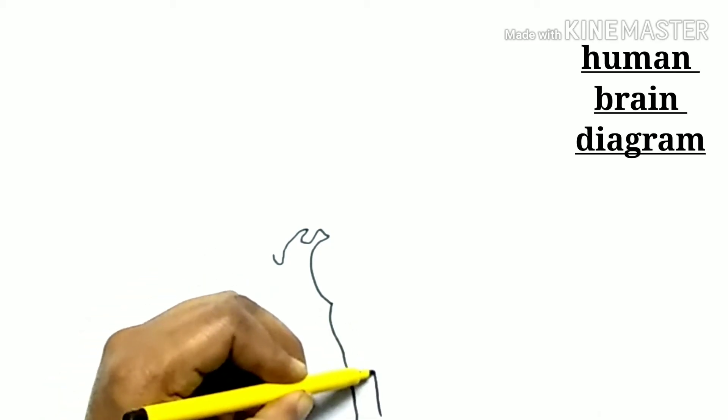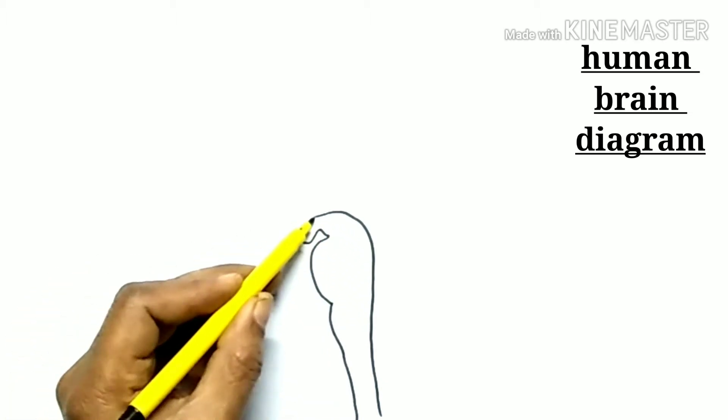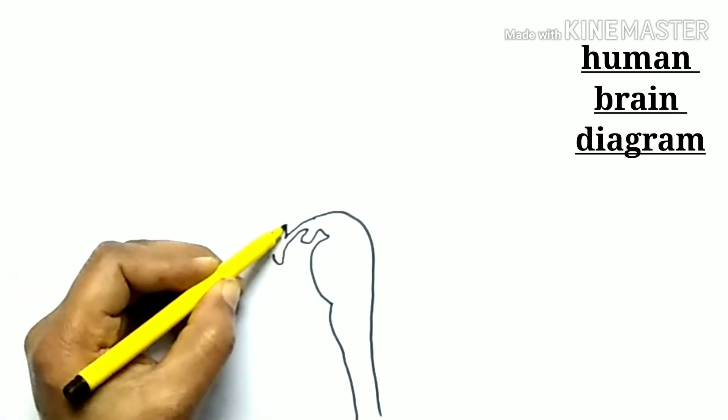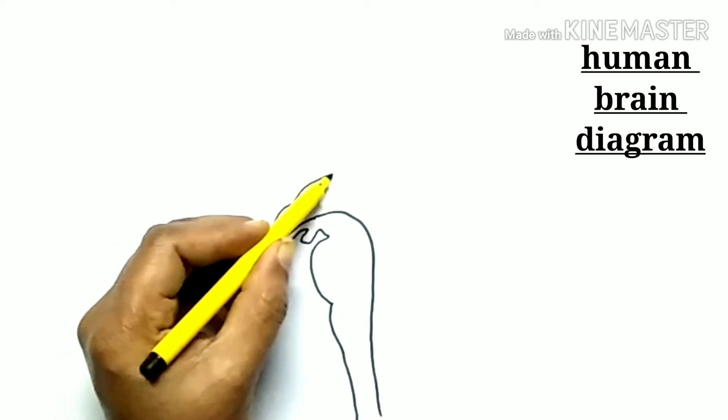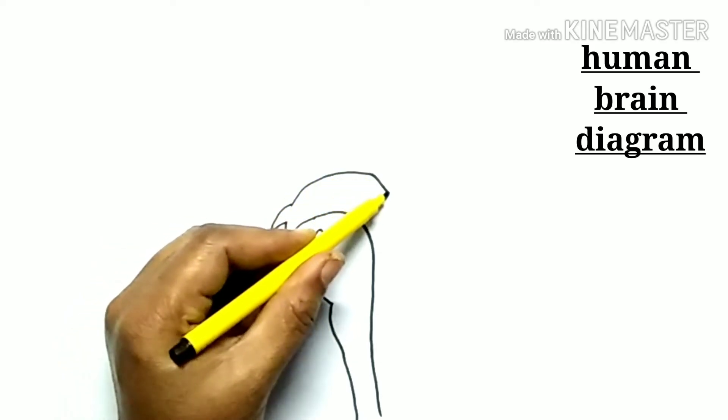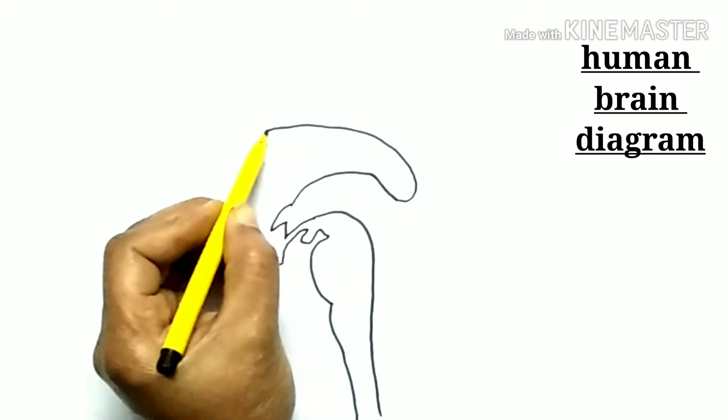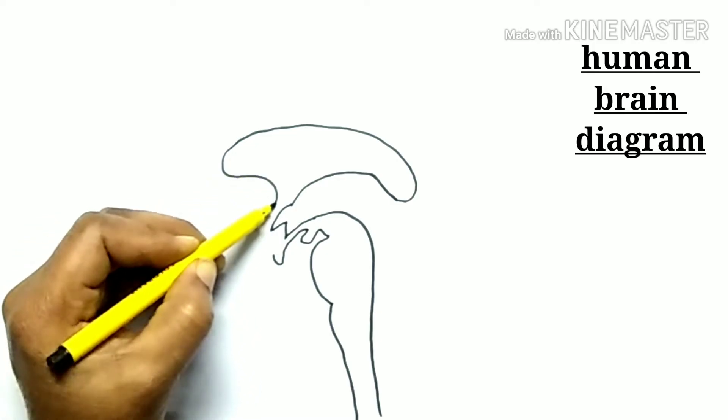The human brain has the same basic structure as other mammal brains, but is larger in relation to body size than any other brain. The brain is enclosed in a brain box called the cranium and protected by cerebrospinal fluid which acts as a shock absorber.